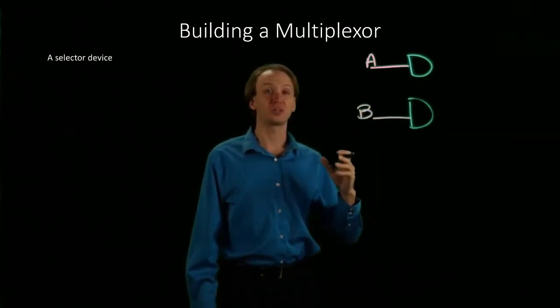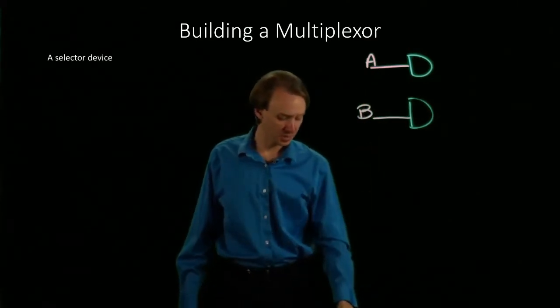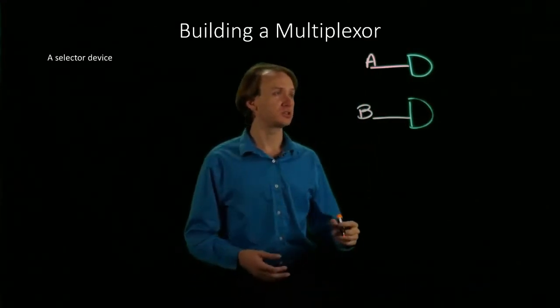The AND gates are going to allow us to control whether we're going to select A or B. And we're going to do this using a selector line.